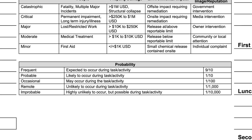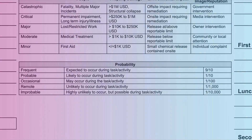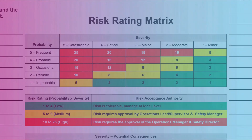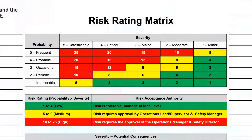Probability is the likelihood that the identified hazard will result in an incident. It falls into one of three categories — low, medium, and high. These are designated on the risk matrix card in a color code similar to a traffic light.